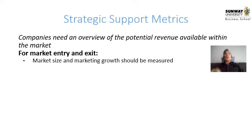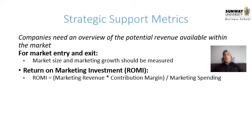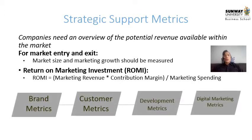What about strategic support metrics? Companies need an overview of potential revenue within the market, including for market entry and exit — measuring market size and growth. We can use ROMI, or Return on Marketing Investment, which is marketing revenue times contribution margin divided by marketing spend. There are four stages of support metrics: brand metrics, customer metrics, development metrics, and digital marketing metrics. This video covers the first three; the next video concentrates on digital marketing metrics.